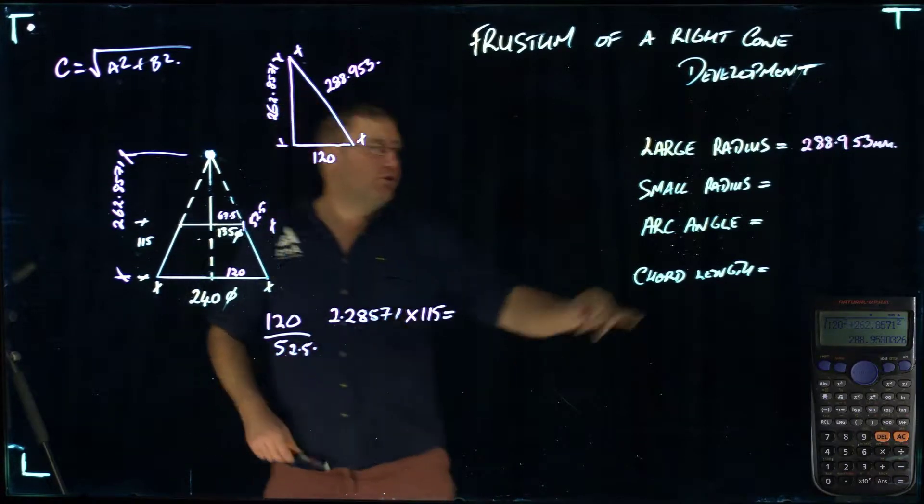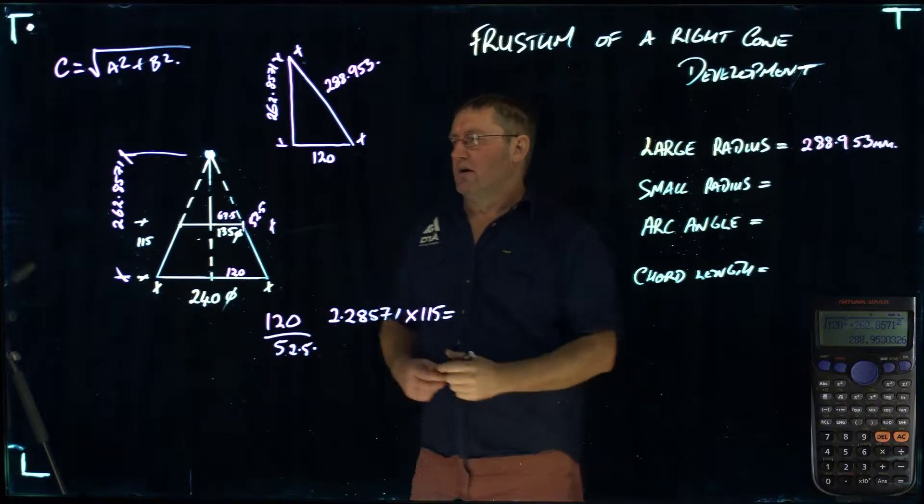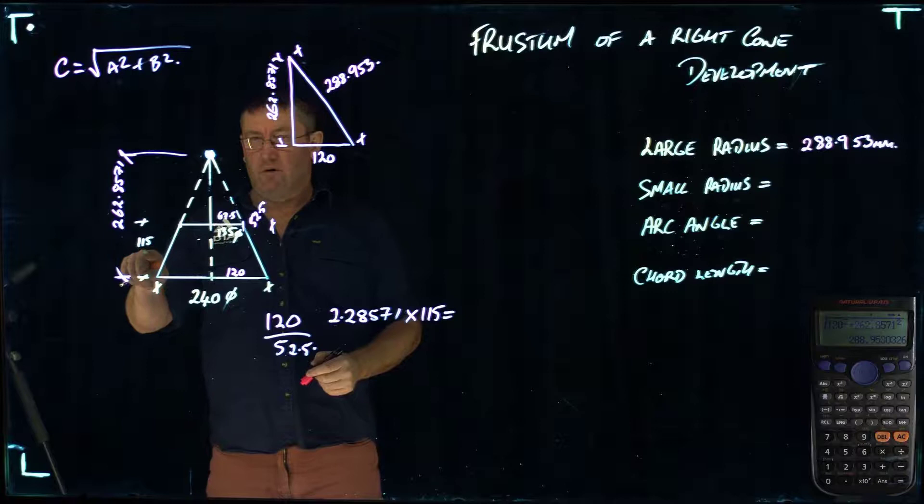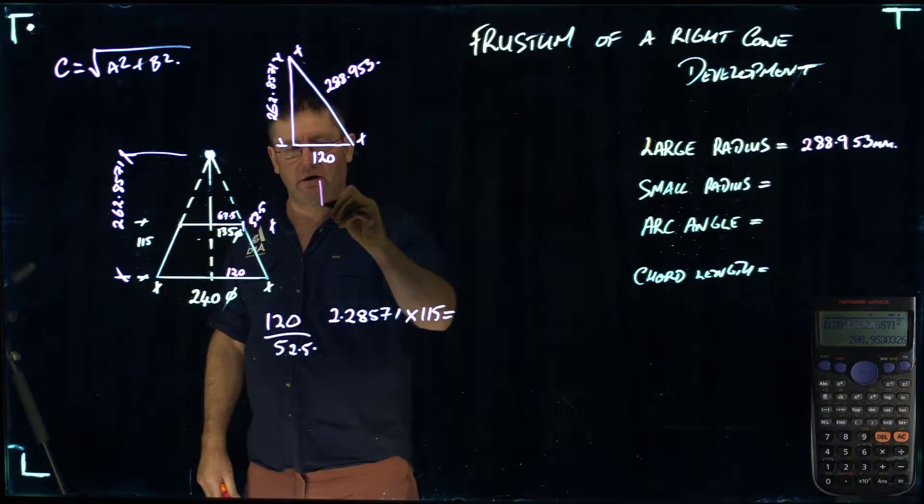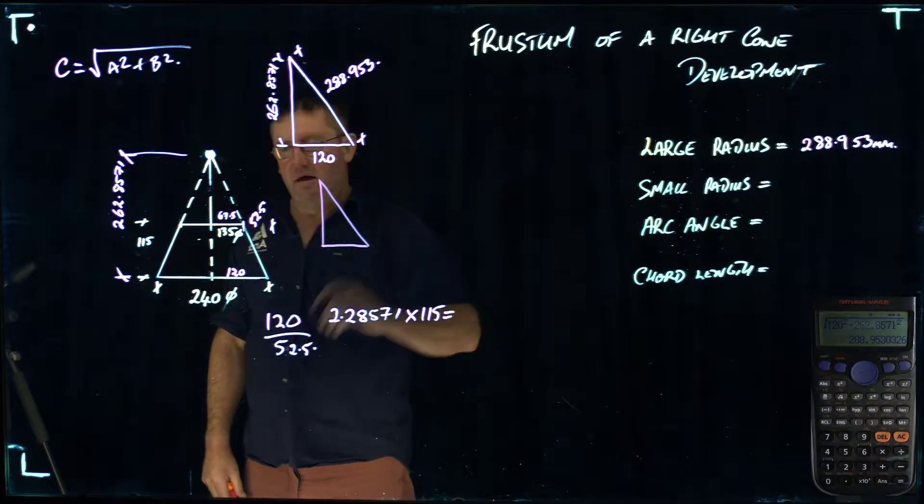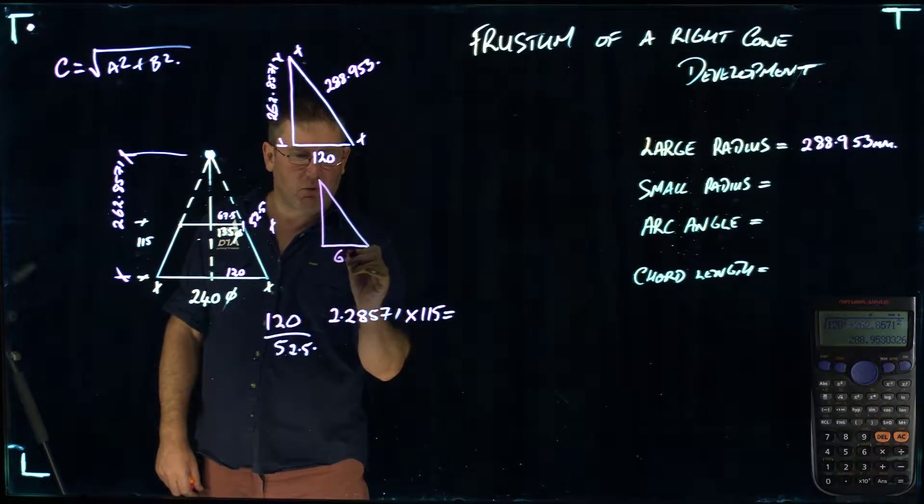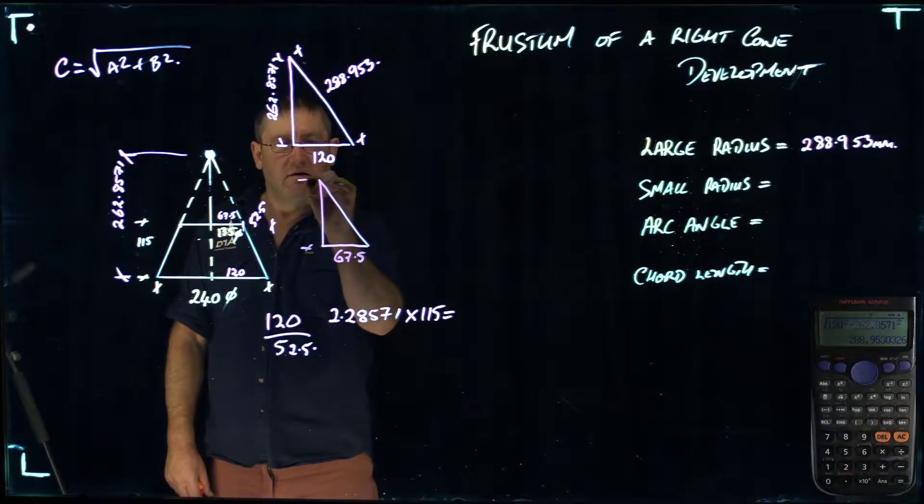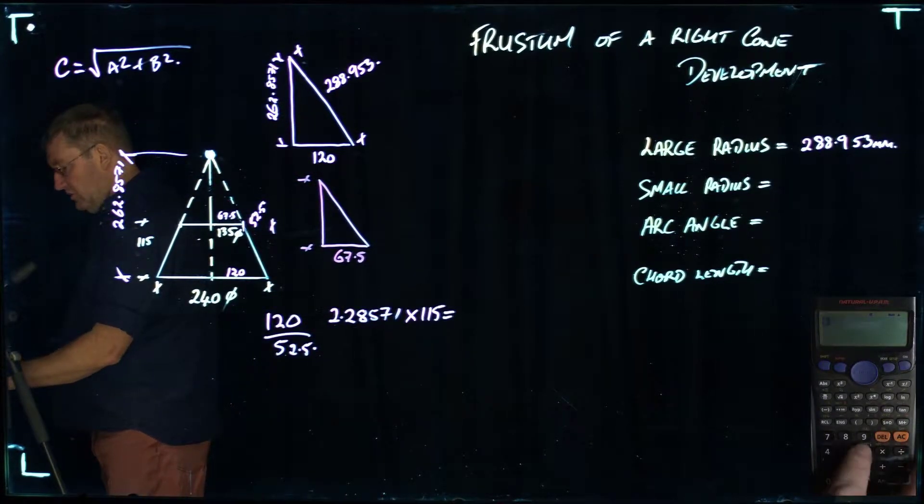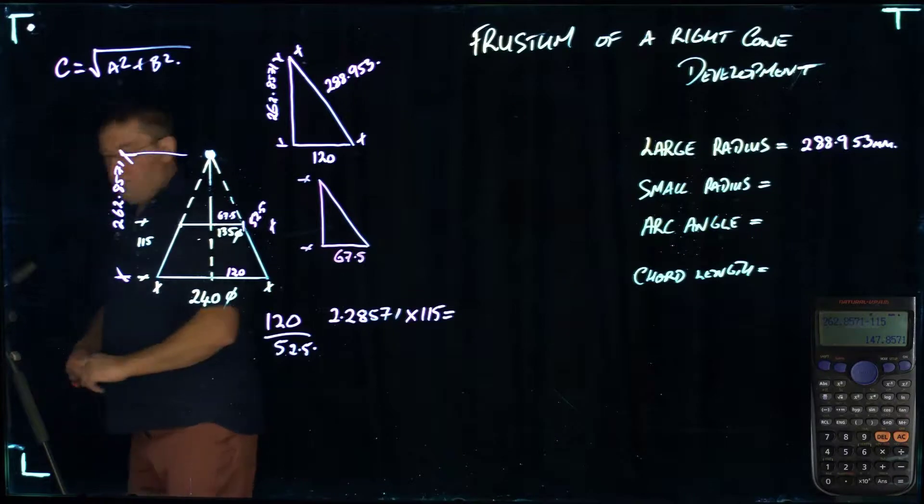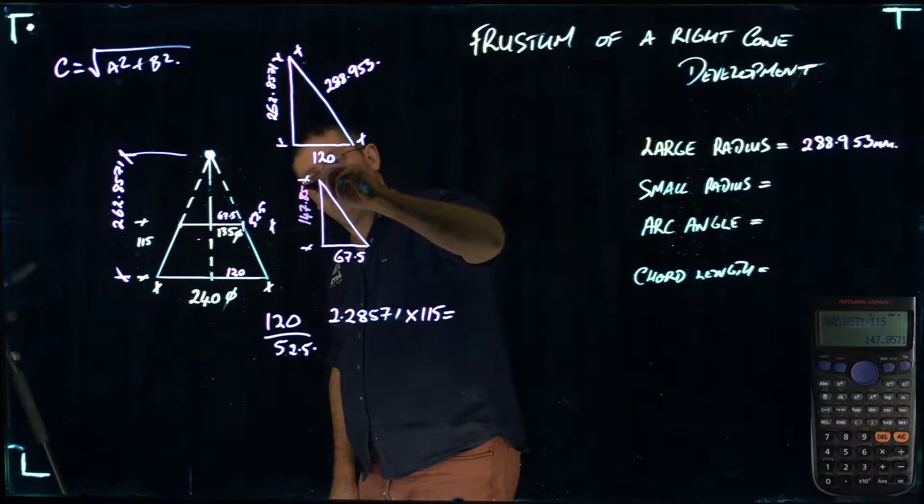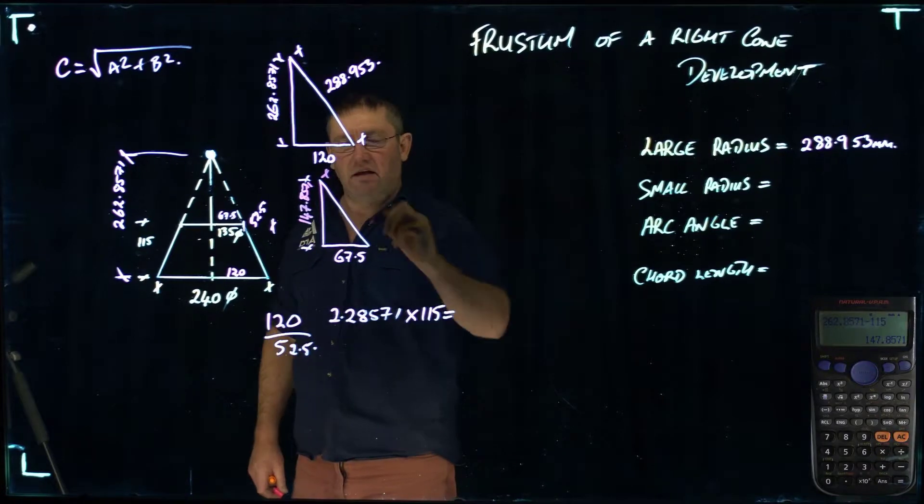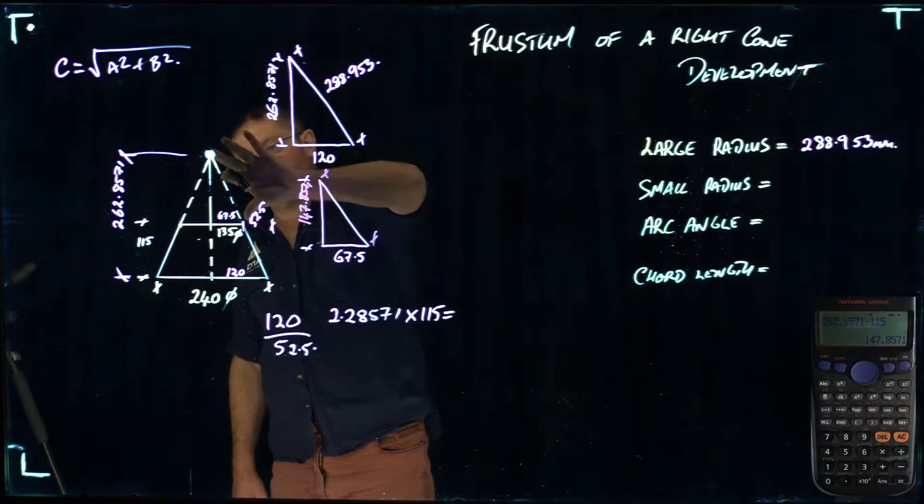From that point, what I want to do is determine my small radius. How we go about that is we minus the 115 millimeters off the 262.8571. I'm going to draw another triangle here. This triangle at this point is going to be 67.5 millimeters, and it's going to be 262.8571 minus 115, which means the vertical height is 147.8571.